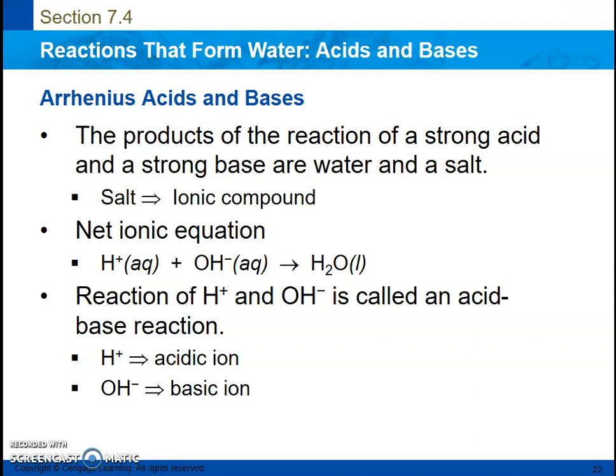The products of an acid-base reaction — a reaction between a strong acid and a strong base — are water and a salt. I mean a general ionic compound, not table salt. Table salt can be generated if you use hydrochloric acid and sodium hydroxide, but that is just one ionic compound. Water will be produced as well. The net ionic equation of an acid-base reaction is always hydrogen ions plus hydroxide ions yield water. The cation and anion — the chloride and sodium, if we were doing hydrochloric acid and sodium hydroxide — would still be aqueous, floating around as spectator ions and are crossed out. They are not part of the net ionic equation.